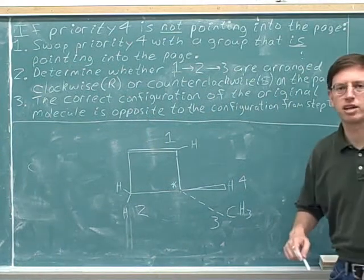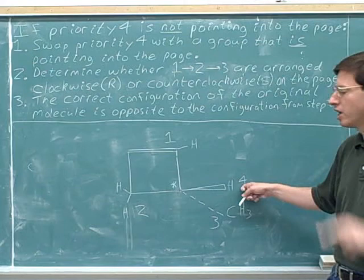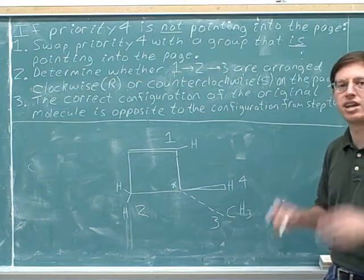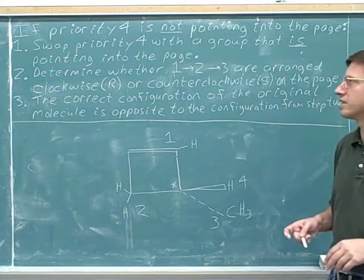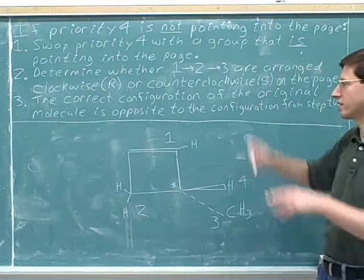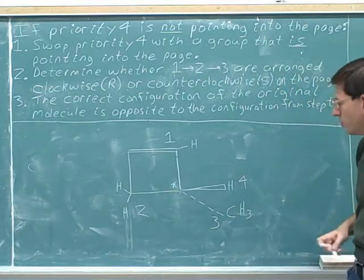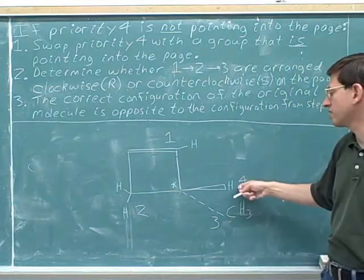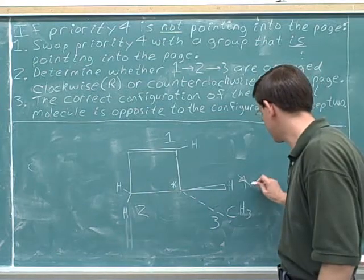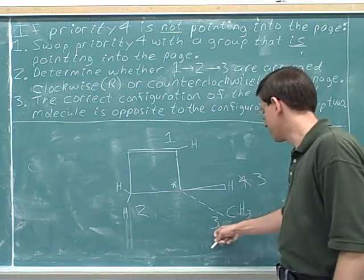Now we have to decide what case we're in. The number four priority is on the wedge, so the number four priority is not pointing into the page. Not pointing into the page — that's when we need our Case 2 three-step method. We have to start by swapping the number four so that it is pointing into the page, so we're forced to swap the number four with the number three.